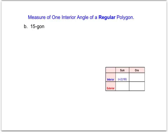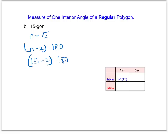We can do the same thing for finding one interior angle of a regular 15-gon. First, we're going to find the total angles with the n minus 2 times 180. If we know there are 15 sides in a 15-gon, we plug that into our formula and get 13 times 180, which is 2,340 degrees. This represents the total interior angles of a 15-gon.